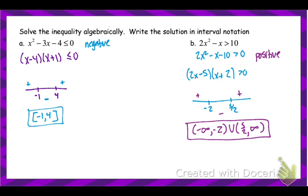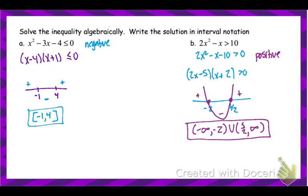You'll probably notice some patterns — both examples went positive, negative, positive. This is the same shape as the graph. If you were to sketch it: two zeros, graph opens up (positive a-value), so it's positive before the first zero, negative between them, and positive after the second zero. Knowing the shape of the graph can help you fill in these sign charts more easily.